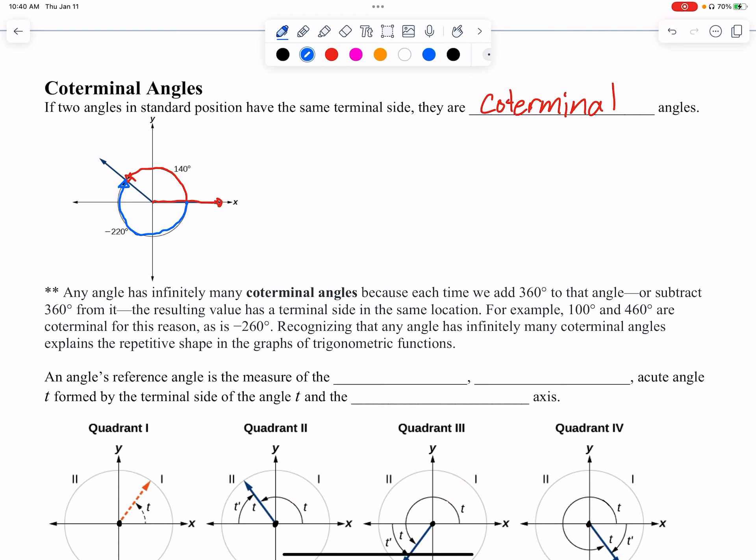What this is going to do for us is this is going to allow us to use big angles and figure things out from big angles using its coterminal angle that would be smaller. So like in this case, whatever we may be doing with these angles, if they gave me negative 220°, instead, I could think of the angle 140° and it would be the same.